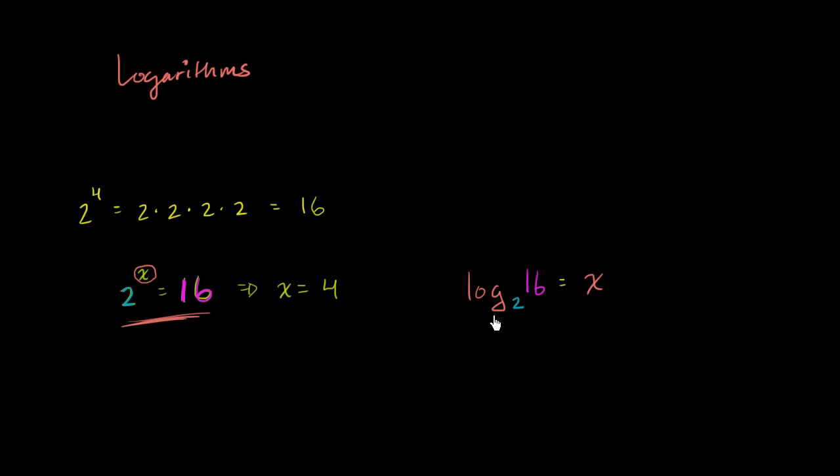This and this are completely equivalent statements. This is saying, if I take 2 to some x power, I get 16. This is saying, what power do I need to raise 2 to to get 16? And I'm going to set that to be equal to x. And you would say, well, you've got to raise it to the 4th power. Once again, x is equal to 4.